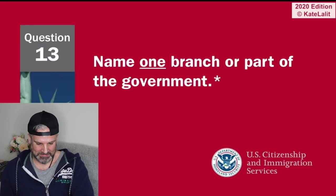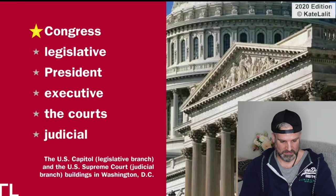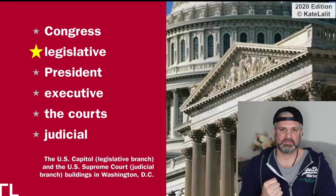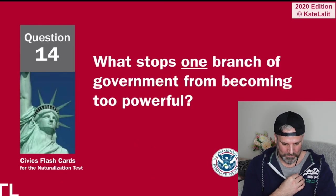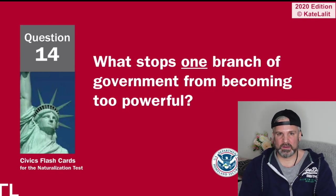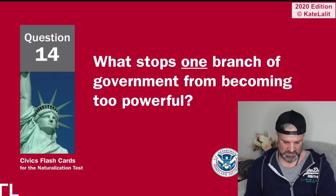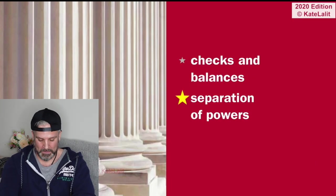Name one branch or part of the government. President is part of the government — and she, Congress, yes legislative. Back in the game: president, executive; the courts, judicial. What stops one branch of government from becoming too powerful? Split it up — checks and balances, separation of powers. Back in the game!